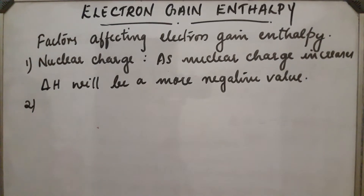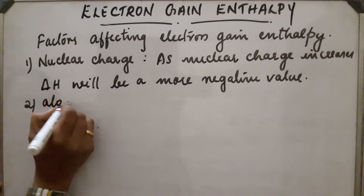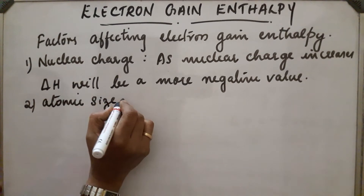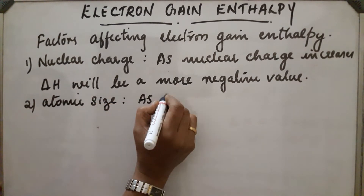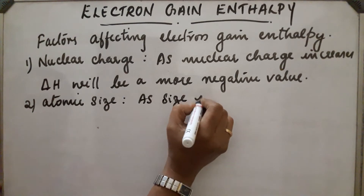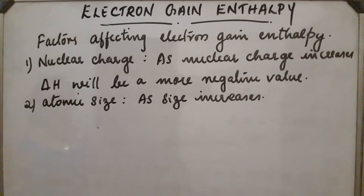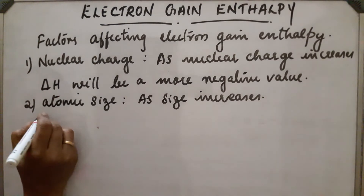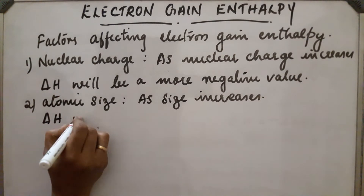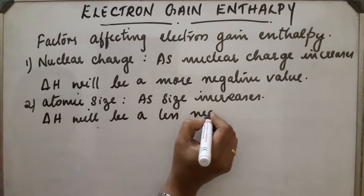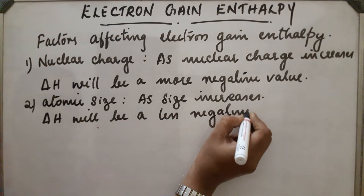Second factor: atomic size. As size increases, nuclear charge decreases, so delta H will be a less negative value.